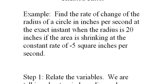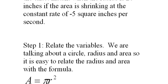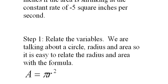So the first thing we do, step one, is we relate the variables. We're talking about a circle, radius and area, so it's easy to relate the radius and area of a circle with the formula A equals pi r squared.